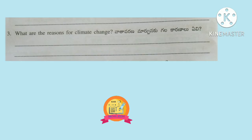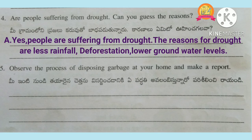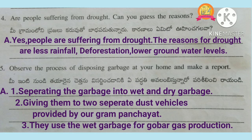Third question: what are the reasons for climate change? The reasons for climate change are activities like cutting trees, using more vehicles which release harmful gases, chemicals from factories, and using large quantity of plastics. Fourth question: are people suffering from drought? Can you guess the reasons? Yes, people are suffering from drought. The reasons for drought are less rainfall, deforestation, and lower groundwater levels.